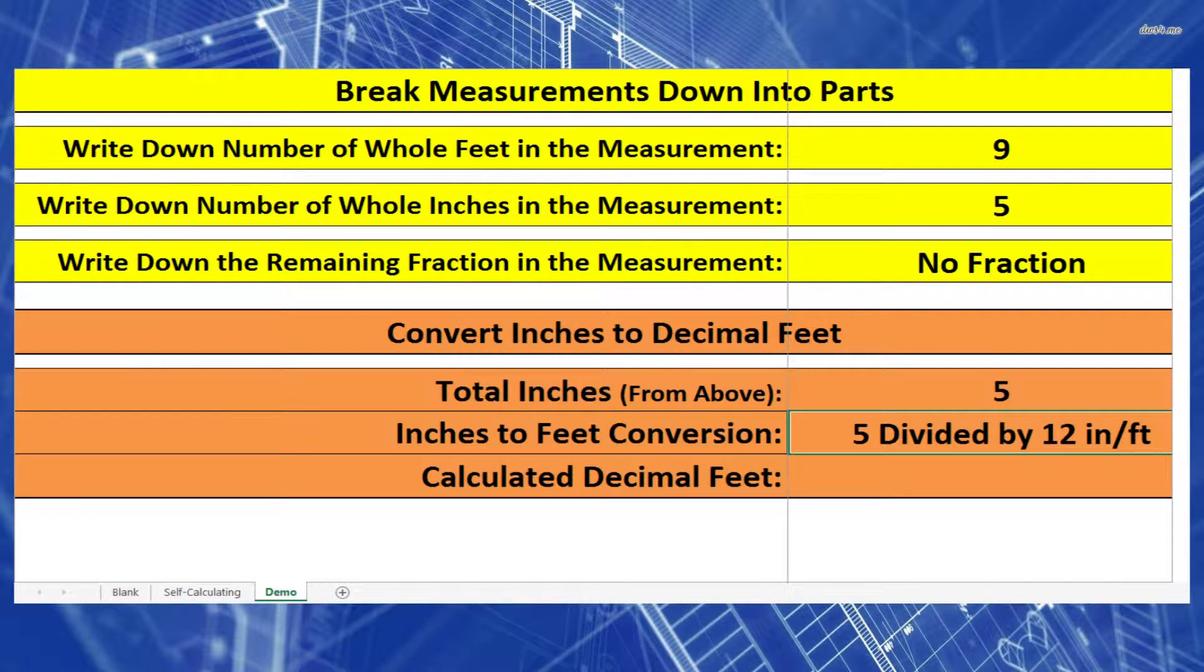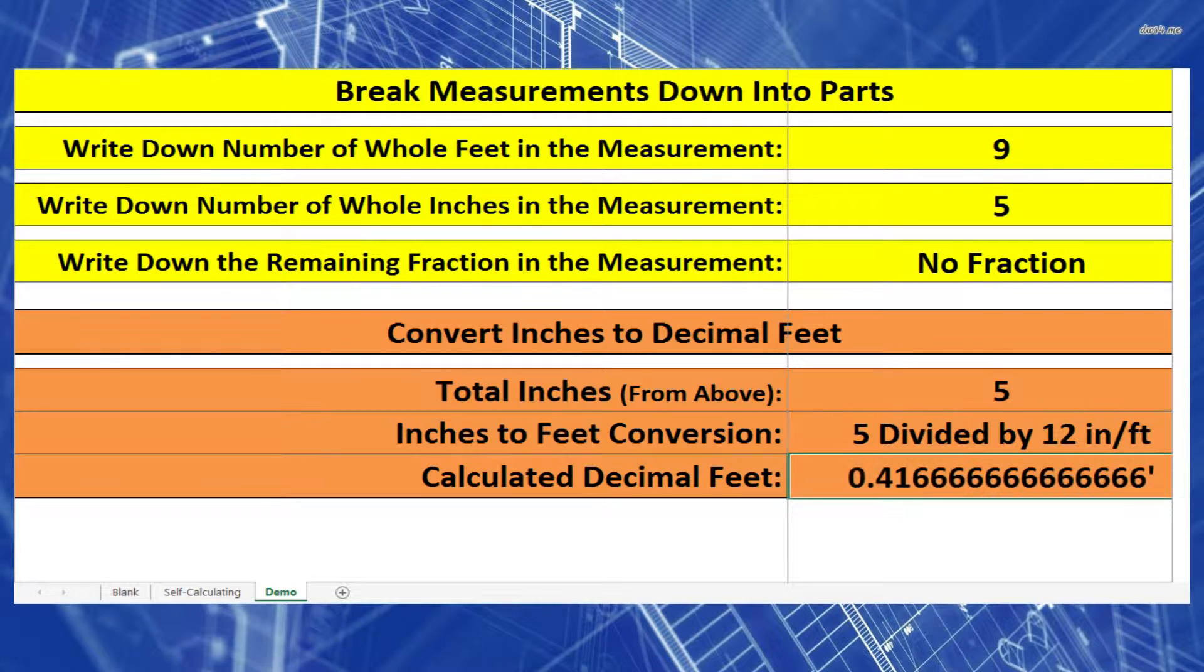So 5 divided by 12 equals 0.416666666. It's a 6 that repeats forever. But let's just round that off to 0.417 feet.